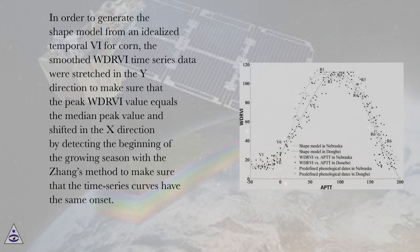In order to generate the shape model from an idealized temporal VI for corn, the smooth WDRVI time series data were stretched in the Y direction to make sure that the peak WDRVI value equals the median peak value and shifted in the X direction by detecting the beginning of the growing season with the Jong's method to make sure that the time series curves have the same onset.